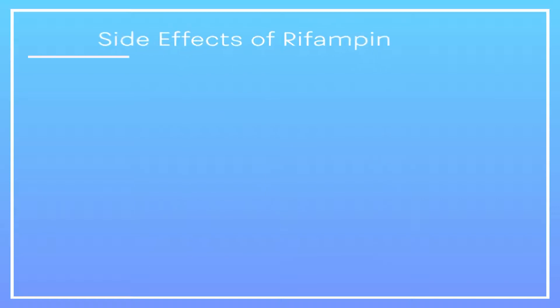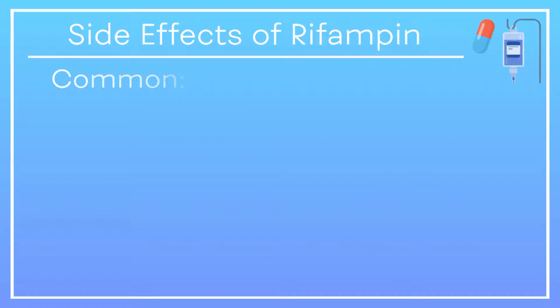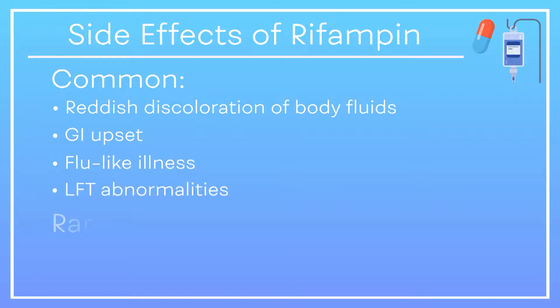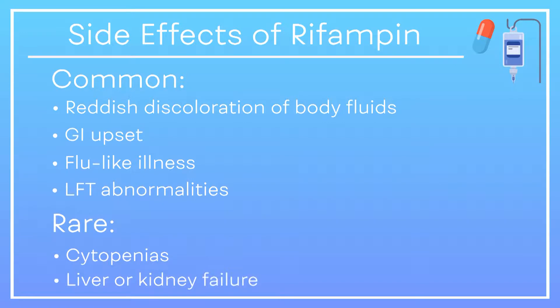Rifampin can cause a reddish discoloration of body fluids, GI upset, flu-like illness, and LFT abnormalities. Rarely, rifampin can cause cytopenias and liver or kidney failure.